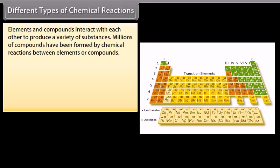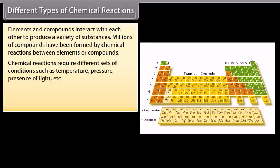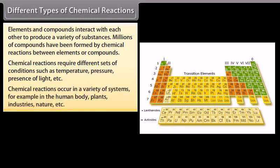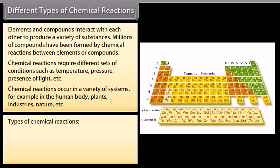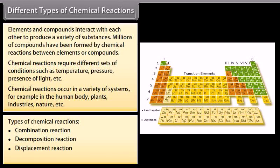Different types of chemical reactions. Elements and compounds interact with each other to produce a variety of substances — millions of compounds have been formed through chemical reactions. Chemical reactions require different conditions such as temperature, pressure, and presence of light. They occur in a variety of systems, for example the human body, plants, industries, and nature. The main types are: Combination, Decomposition, Displacement, and Double Displacement reactions.